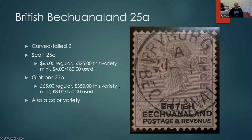This is a fairly expensive stamp. Gibbons and Scott prices are actually quite similar — Gibbons about the same price but in pounds rather than dollars. Back in the old days that was quite a difference, but these days a pound isn't worth much more than a dollar, so it's surprisingly similar. This is a used variety — a 180 catalog stamp. There is also a color variety of this '2½'.